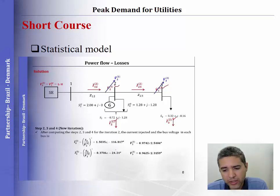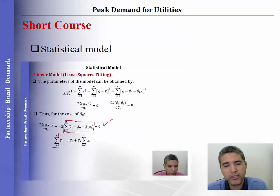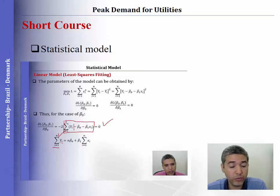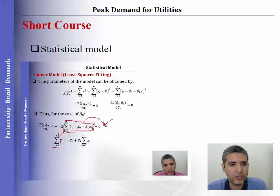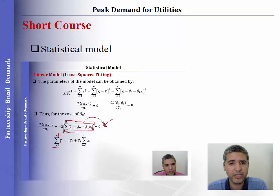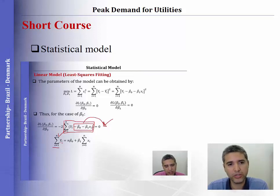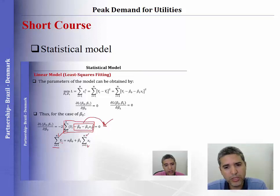In the third part of this short course, I present a statistical approach to simulate future scenarios of peak demand and then decide which is the best contract. This is necessary because the problem of peak demand should be solved under uncertainty, and because of this we need to simulate future scenarios of peak demand — a statistical approach is appropriate for this task.